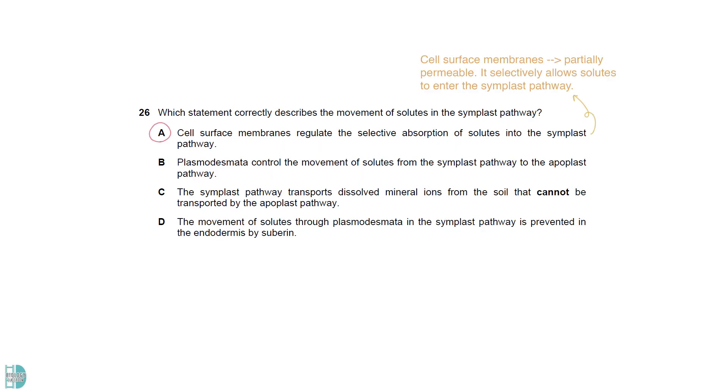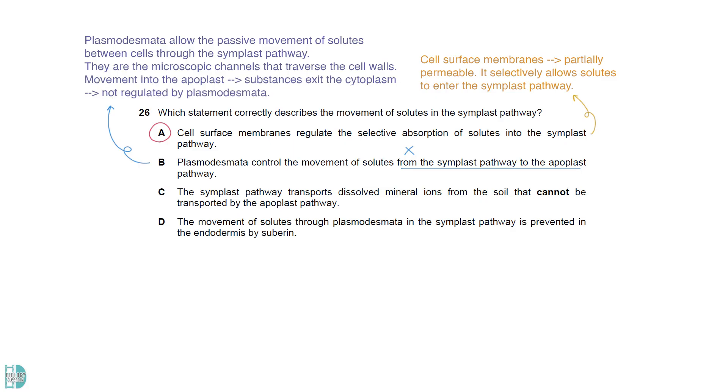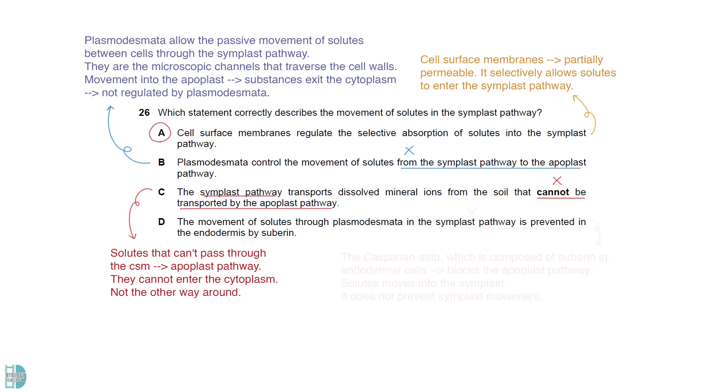A is correct. The cell surface membranes of root hair cells are partially permeable. It selectively allows solutes to enter the symplast pathway. B is wrong. Plasmodesmata allow the passive movement of solutes between cells through the symplast pathway, as they are the microscopic channels that traverse the cell walls. Movement into the apoplast involves exiting the cytoplasm, not regulated by plasmodesmata. C is incorrect. The solutes that can't pass through the cell surface membrane will be transported in the apoplast pathway, as they cannot enter the cytoplasm, not the other way around. D is also incorrect. The Casparian strip, which is composed of suberin in endodermal cells, blocks the apoplast pathway, forcing solutes into the symplast. It does not prevent symplast movement.